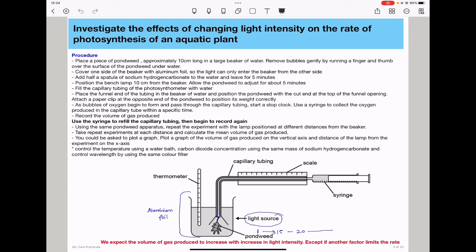And we also need to control the wavelength. We can do this by using the same color filter. It means for all experiments, you will put a color filter in between the light source and the experimental setup so that the pondweed is exposed to the same wavelength throughout the experiment and for all variations of light intensity.